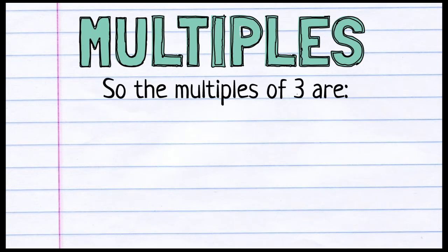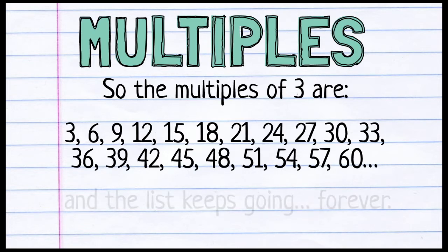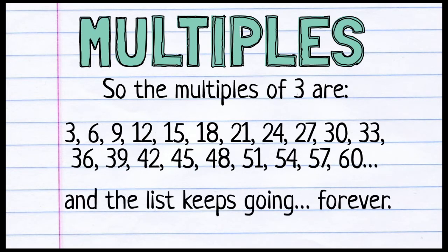So what are the multiples of 3? 3, 6, 9, 12, 15, 18, 21, 24, 27, 30, 33, 36, 39, 42, 45, 48, 51, 54, 57, 60. These are all multiples of 3. And the list keeps going forever.